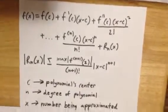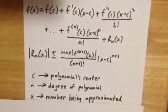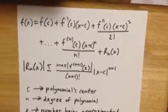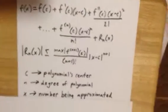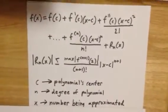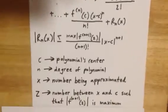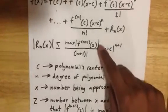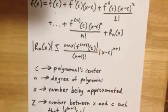Now, the trickiest part is probably this mess right here, where we're trying to find the maximum of the n plus 1th derivative of f. So z, it's just a number between x and c, such that we find the n plus 1th derivative of f to be a maximum.